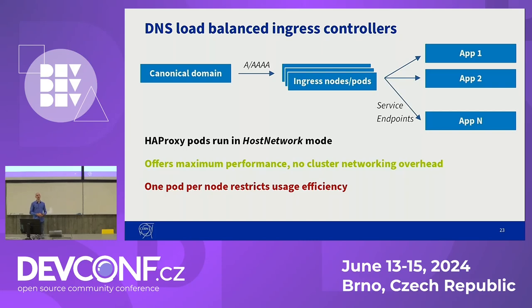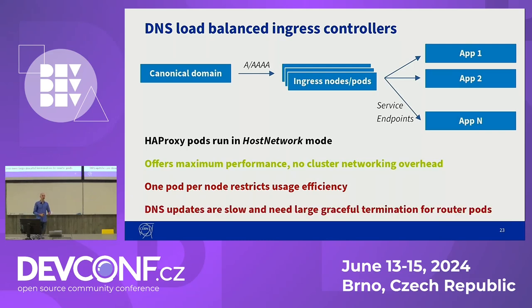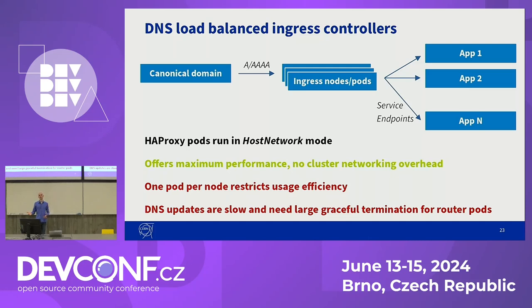The downside is that we can only have one pod per node, which means that if the pod does not actually need all of the resources of the node, we cannot schedule a second pod on the node because the port is already blocked. This can be somewhat mitigated by correctly choosing the size of the VM that you're running these pods on. Another downside is that we need to be very careful when doing changes in our infrastructure, or at least have a very long graceful termination for these router pods, because DNS updates are slow — when we remove a machine from our cluster, we also remove the IP from the DNS, but it will still get requests for a while because DNS changes take a while to propagate.